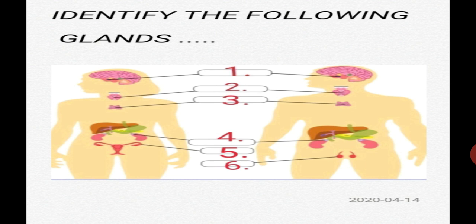Gland number two is located within the neck region. The shape of this gland is butterfly-shaped. It secretes one important hormone which plays an important role in the metabolic activity of the human body. Can you tell me the name of this gland? It is situated within the neck region. Yes, it is the thyroid gland.